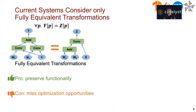But current systems consider only fully equivalent transformations. The left figure shows an example. In a fully equivalent transformation, the two programs always produce the exact same results for arbitrary output positions. An advantage of fully equivalent transformation is preserving functionality, and we don't need to worry about potential model accuracy loss when applying these transformations. On the other hand, a drawback is that we will miss some optimization opportunities and only achieve sub-optimal performance.